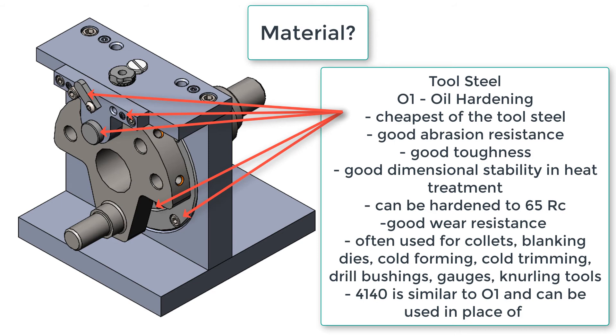And 4140 steel, having similar properties to O1, is often used as well. For this jig, O1 would be used for all the remaining parts that the A36 steel was not used for.